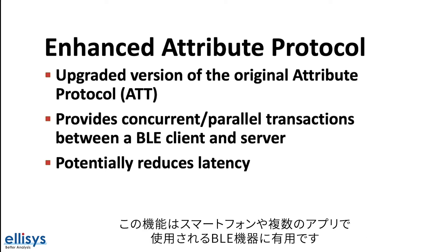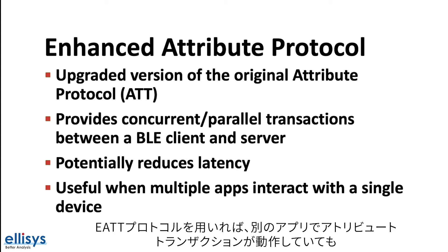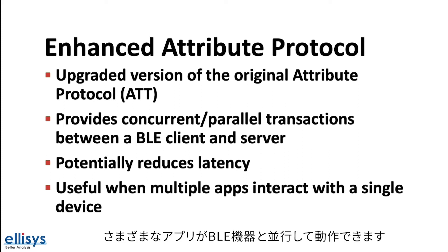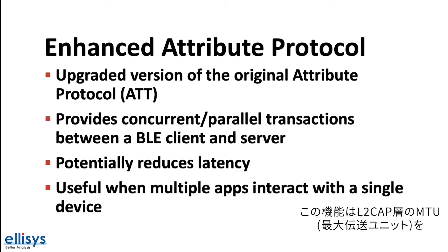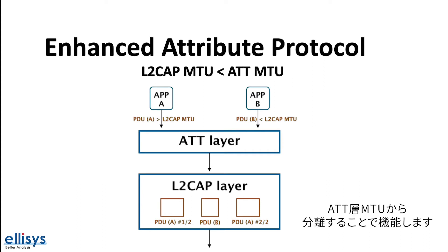For example, this is useful on a smartphone where multiple apps may be interfacing with a Bluetooth Low Energy device. By utilizing the enhanced attribute protocol, an app's attribute transaction would not be blocked while another app's attribute transaction is currently in progress, essentially allowing different apps to interact with a Bluetooth Low Energy device in parallel. The way this works is by separating the L2CAP layer maximum transmission unit or MTU from the attribute layer's MTU.